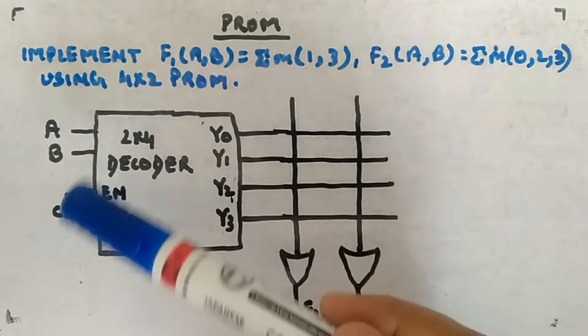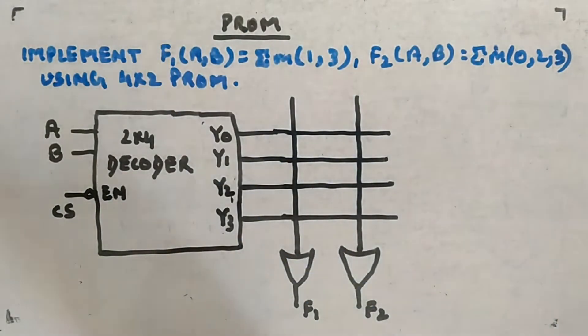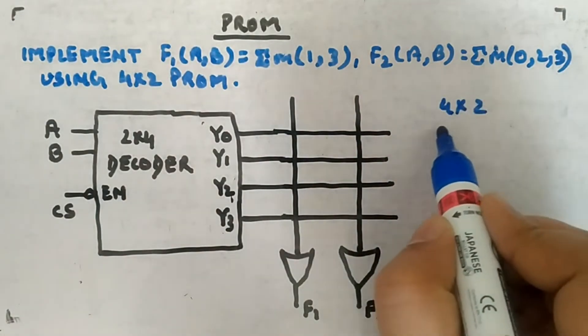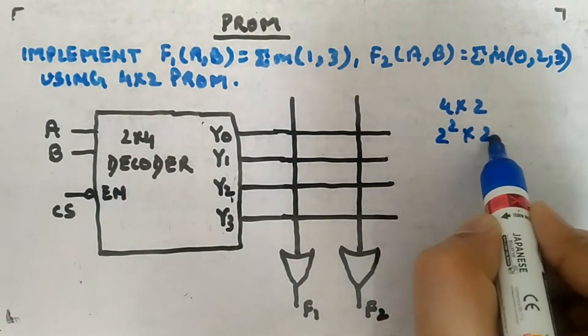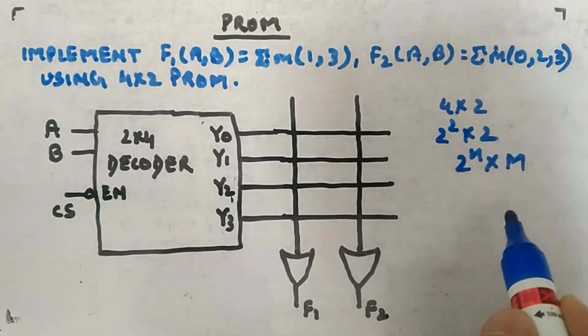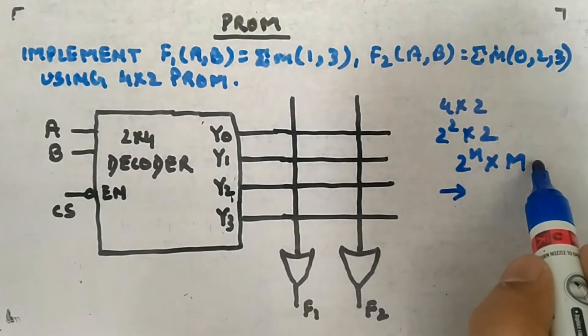Here I have made the structure. You can see two outputs are there. Which decoder will be used? I have given 4×2 PROM, means 2 to the power 2 × 2 PROM. You know that 2 to the power n × m PROM needs n × 2 to the power n decoder.